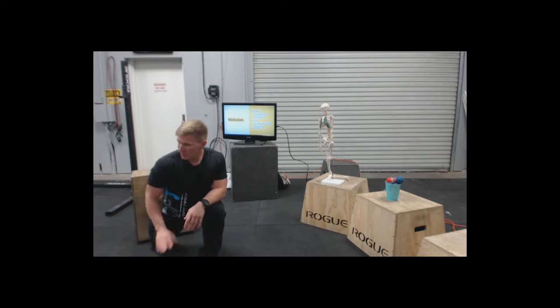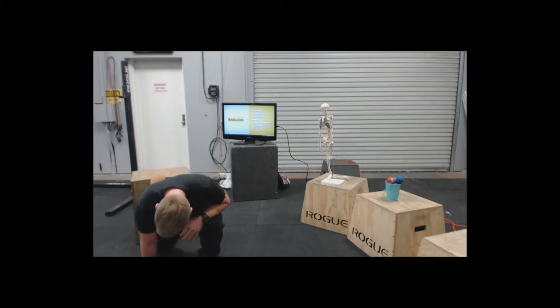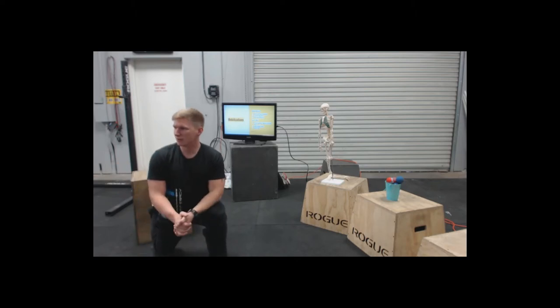Now not everybody can do this, so here's your regressions for this stretch. Take your knee and pull it away from the wall, and pull your foot away from you. That's how you make the stretch easier. You take the tension out of your quad by pulling your knee away from the corner of the wall.